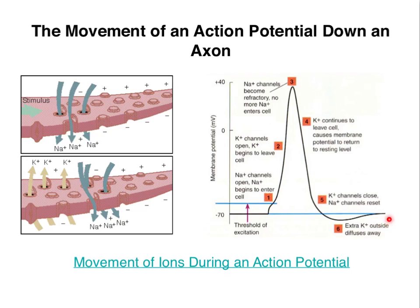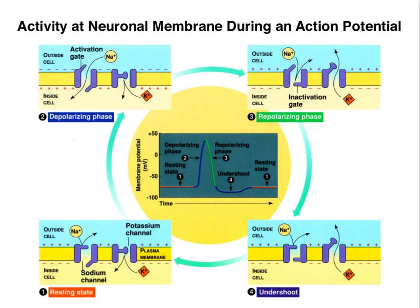At this point, all we discussed is that the action potential is initiated at the axon hillock — between the cell body and the axon of the neuron. How are we going to propagate this electrical signal along the length of the axon, which in some situations can be as long as several meters in certain organisms? We accomplish this using the same series of events from the previous video, but passing those events along the length of the axon.